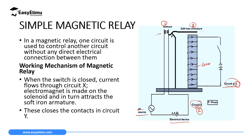If you connect the switch on circuit X, current is going to flow in the solenoid. When current flows in the solenoid, this core will get magnetized. When the soft iron core inside the solenoid gets magnetized, it will become a magnet.